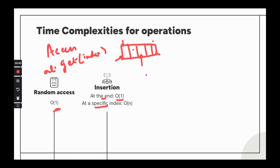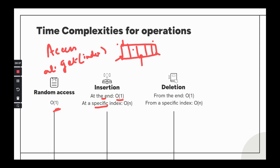Similarly for deletion: deleting at index 0 or the last element is O(1), but deleting from the middle requires shifting, so it takes O(n) linear time. Finally, traversal or search requires going through every memory location one by one, like using a for loop, which takes O(n) linear time.